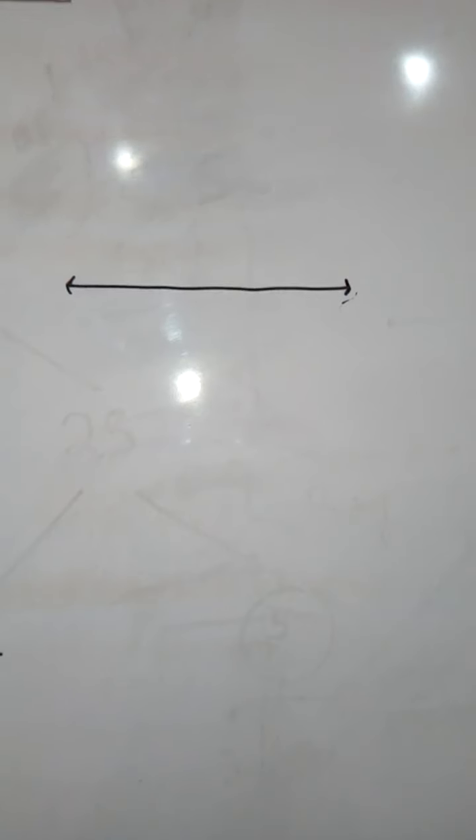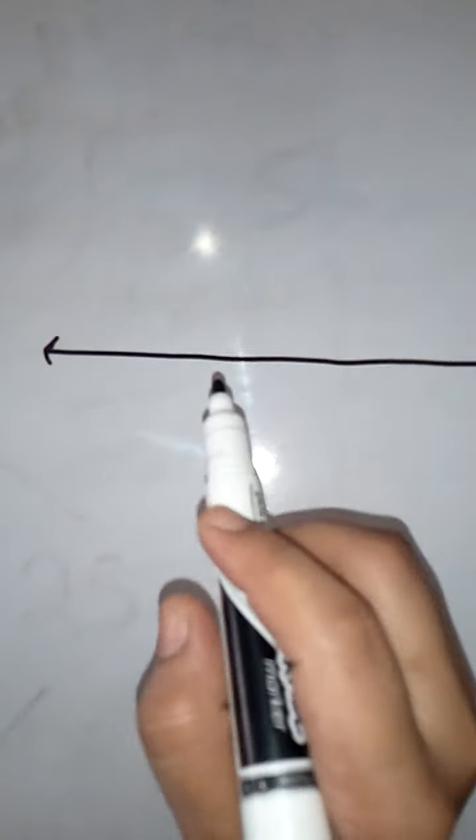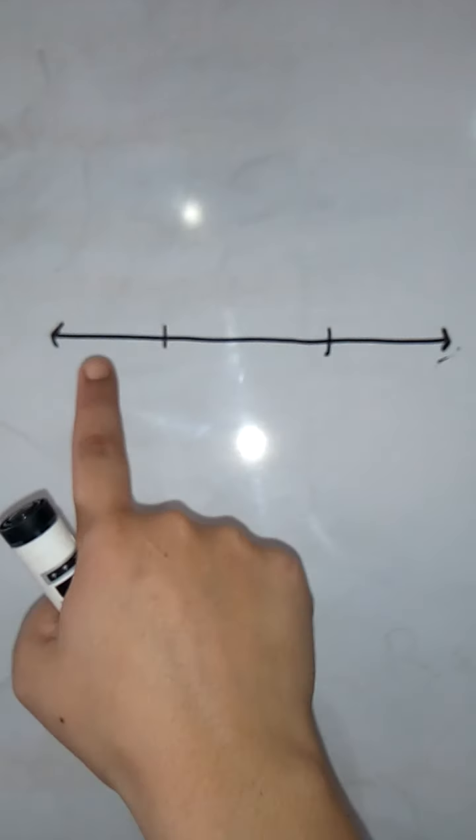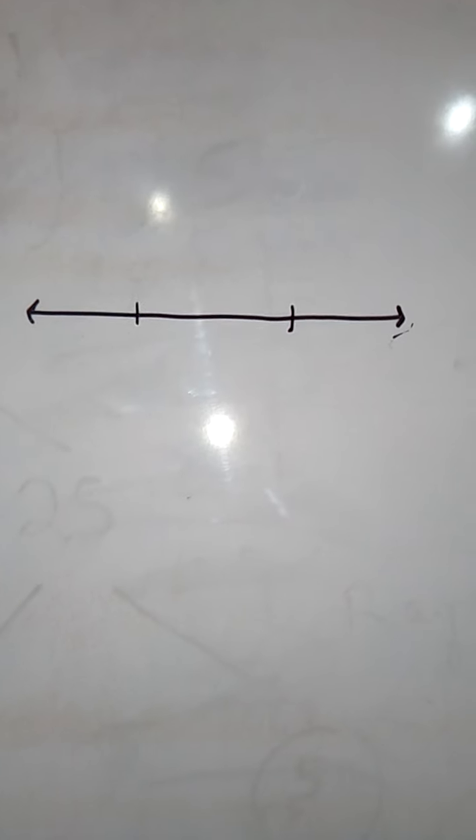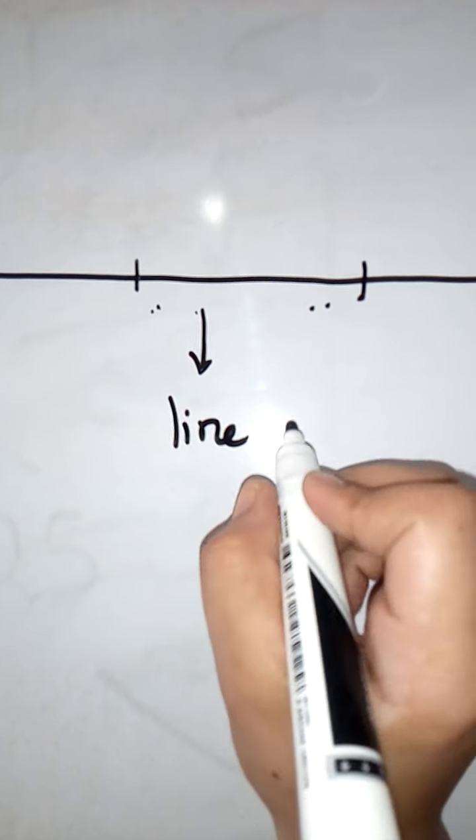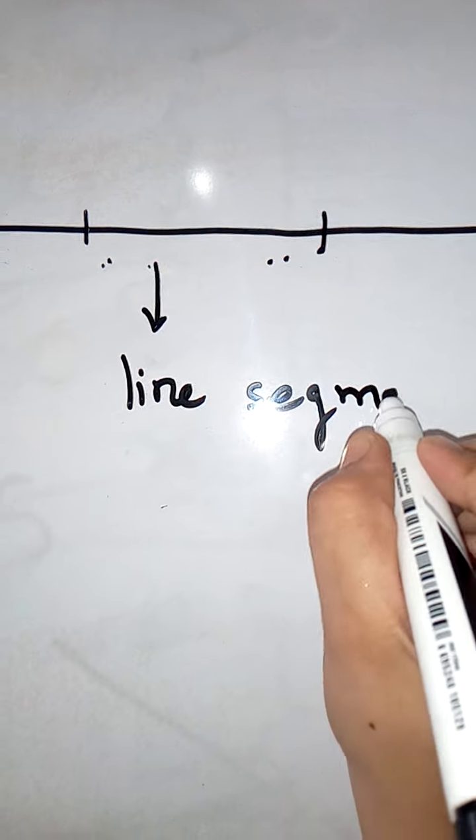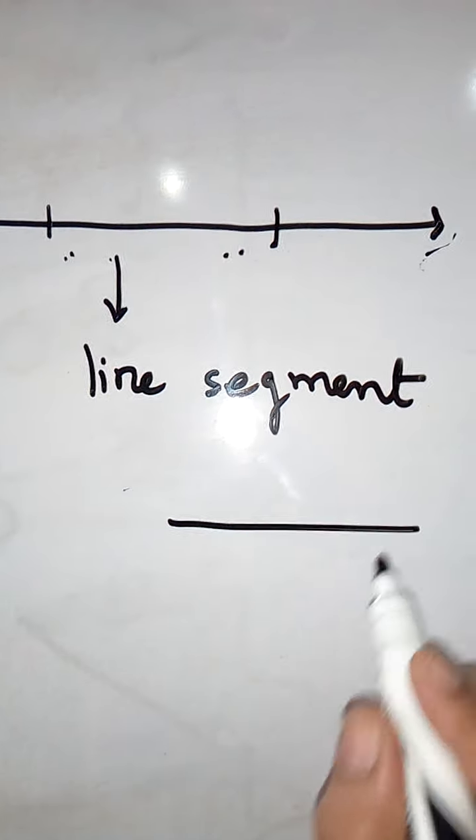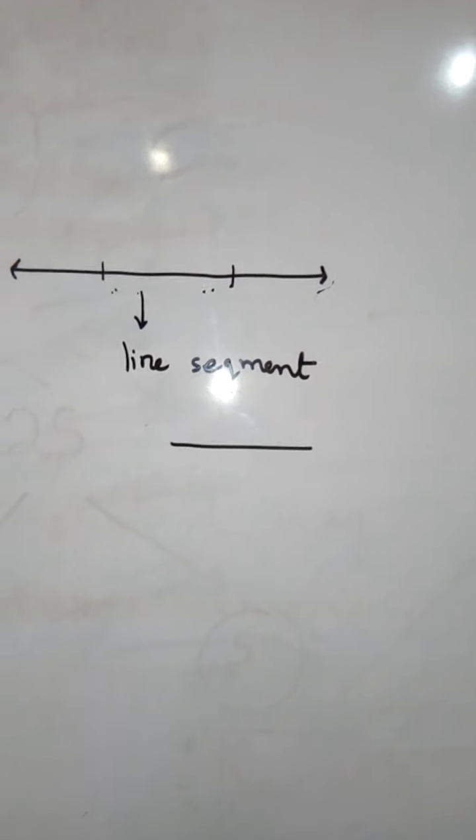And then if I am going to cut this line from two parts like I have done it over here, when I am going to cut this line from the two parts, then the distance between this cutting is known as line segment, which you have made it in your copies as well. It looks like this.